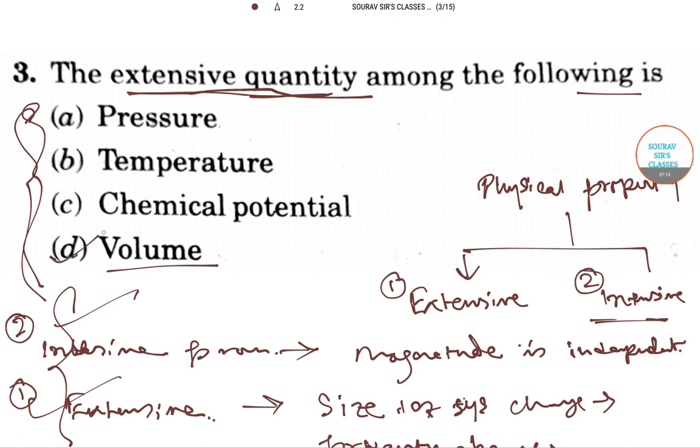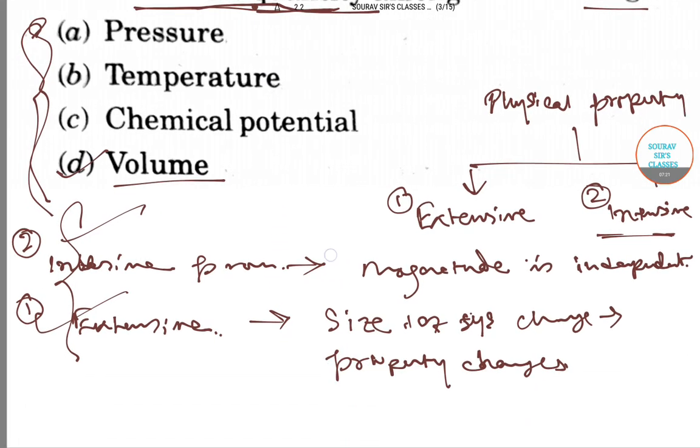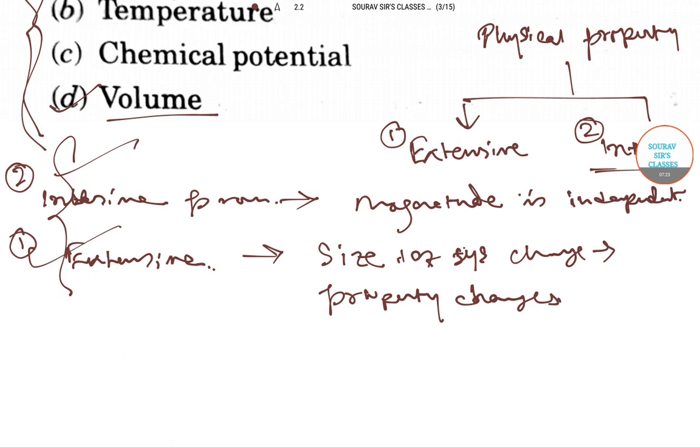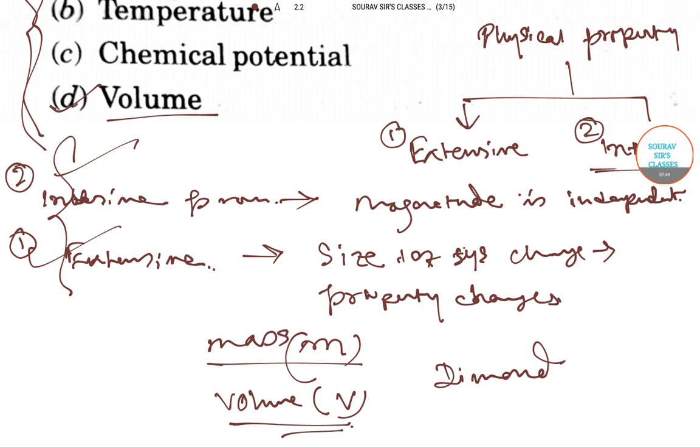I think volume will be the answer. I'm just giving the logic to my answer. Suppose mass and volume - we can denote M as mass and the volume as V. A diamond is taken that has M mass and volume V. These are directly proportional to the amount that has left after cutting it from the raw material.